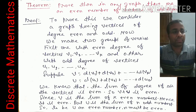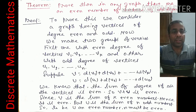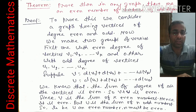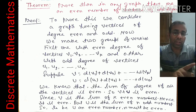There is another important theorem: in any graph, there are an even number of vertices of odd degree. This means the vertices whose degree is odd will always occur in even count. For example, if one vertex has odd degree, there must be at least one more vertex with odd degree.